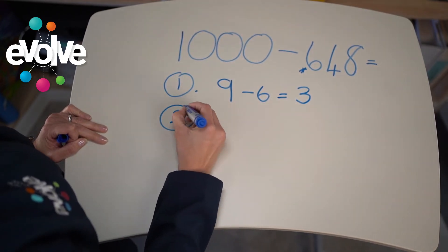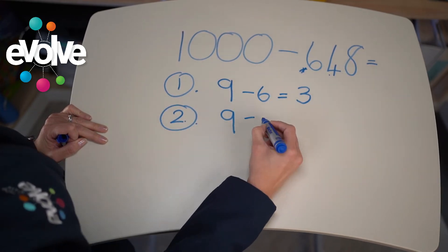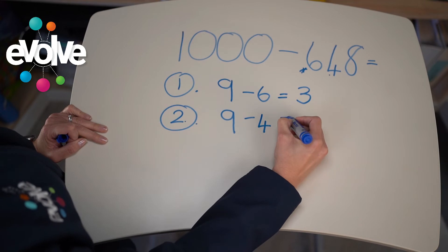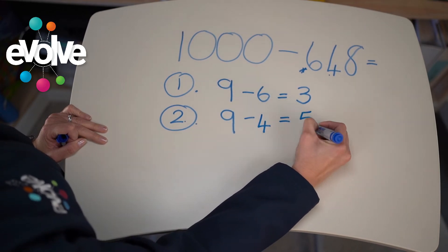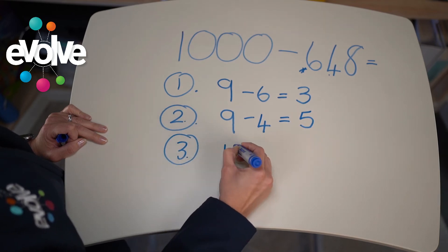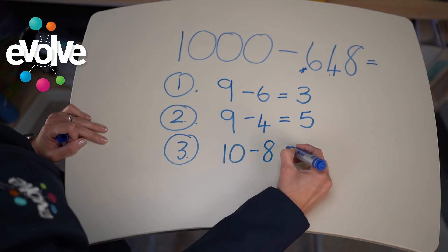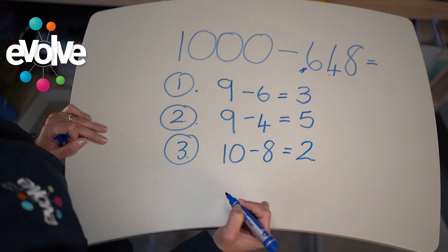Step 2, you take 9 again, you subtract the second number which is 4 and you'll get 5. And for step 3, you're going to take 10 and subtract the last number which is 8. That will give you 2.